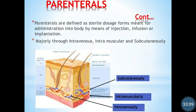Parenterals are defined as sterile dosage forms meant for administration into the body by means of injection, infusion, and implantation, principally through the intravenous, intramuscular, and subcutaneous routes. You can see in the diagram the structure of skin — subcutaneous injections are given at the subcutaneous layer of the skin, intramuscular injections are given in the muscles, and intravenous injections are given directly in the veins. These are the different sites of administering parenterals.